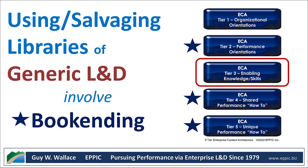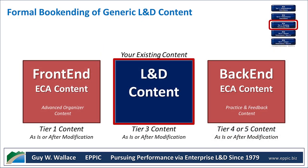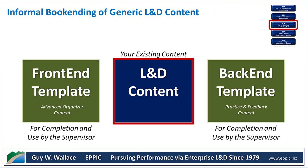To use a generic library of L&D content or to salvage prior investments will require some bookending — and it's not that difficult to do. You can approach this formally by putting a front end and a back end of content that provides advanced organizers up front and plenty of practice and feedback on the back end. You can also do this informally by providing a template for completion and use by the supervisor or peers, and then on the back end again provide practice and feedback so that content transfers back to the job.